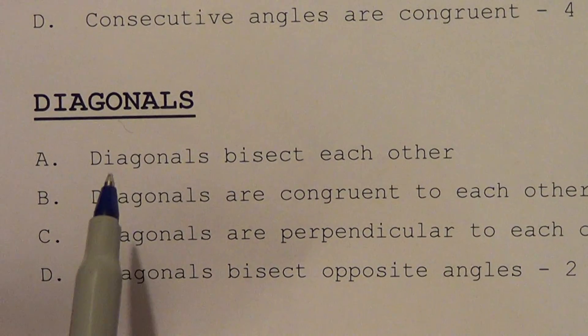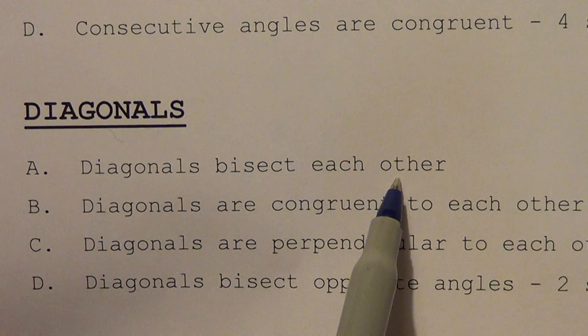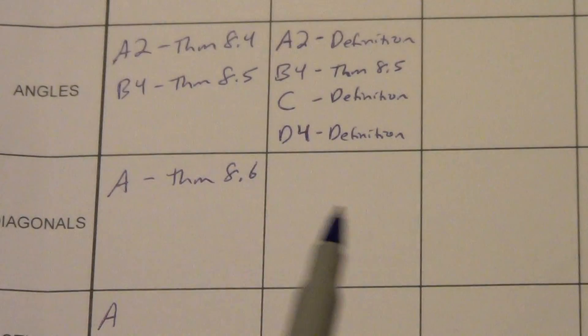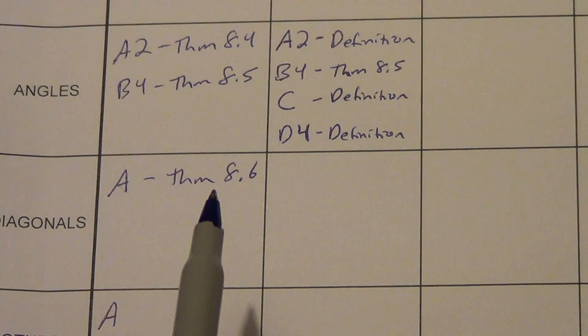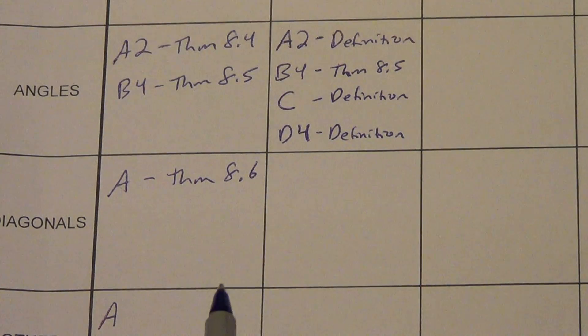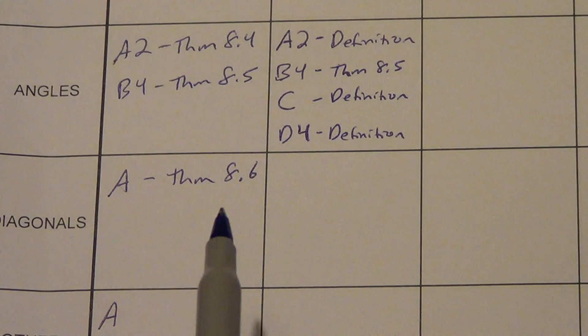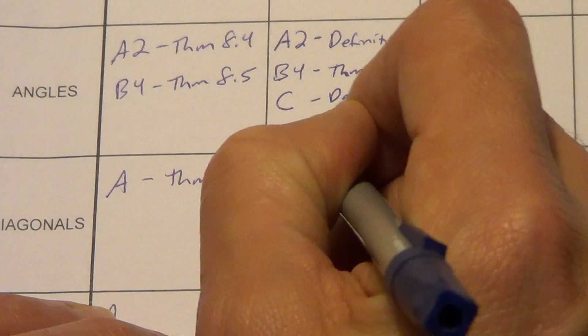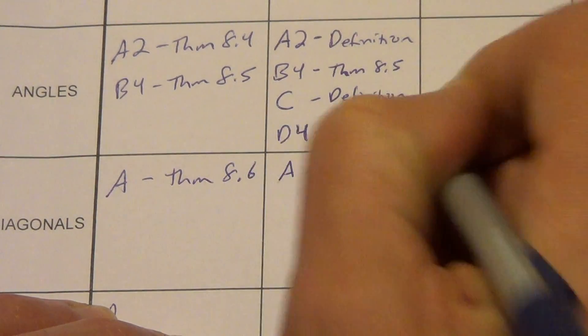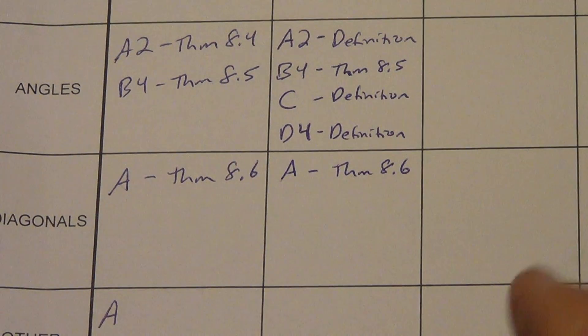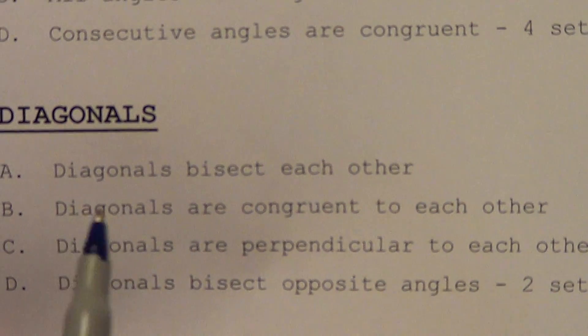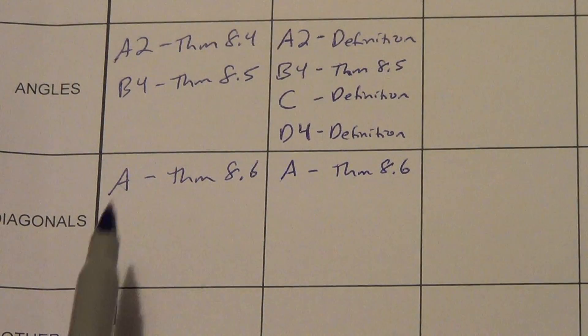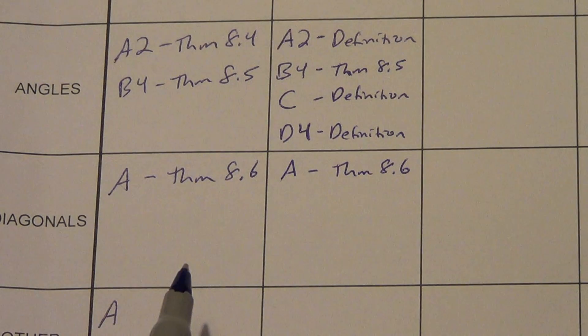Let's go to diagonals. A says the diagonals bisect each other. Remember, in any parallelogram the diagonals bisect each other — that's what theorem 8.6 told us. A rectangle is a parallelogram, so this is going to be true.